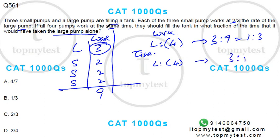Now what do we need? We need time taken by four pumps to the time taken by large pump. So it will be inverse of this three is to one ratio. Inverse of three is to one is one is to three. Option B is your correct choice.